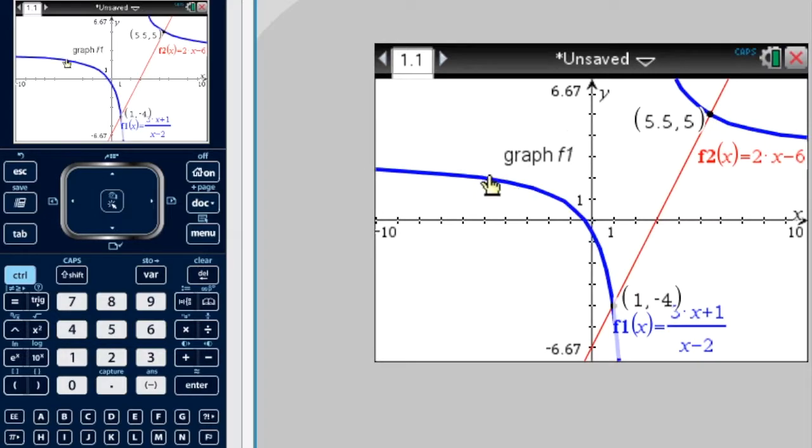Well, it's not here because during this part of the graph, we're above the red function. So when x is less than 1, we're above the red function.